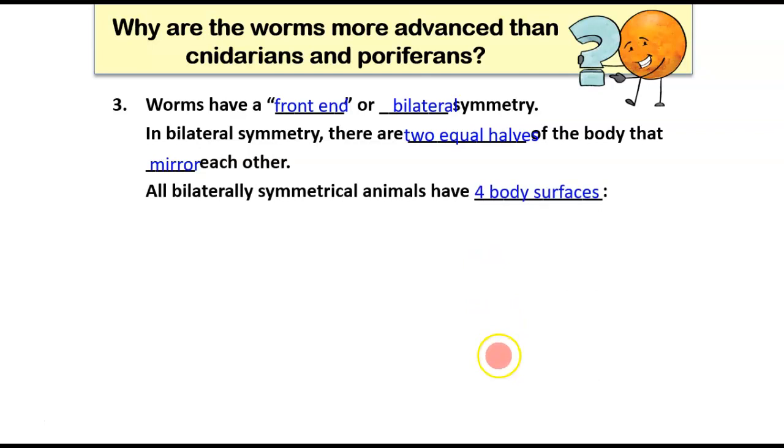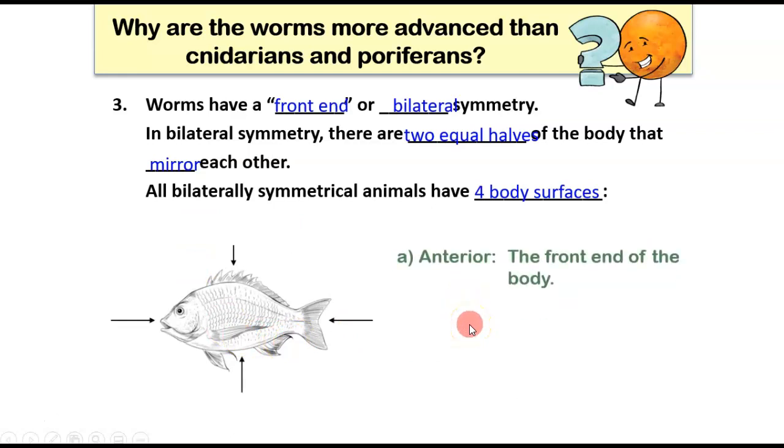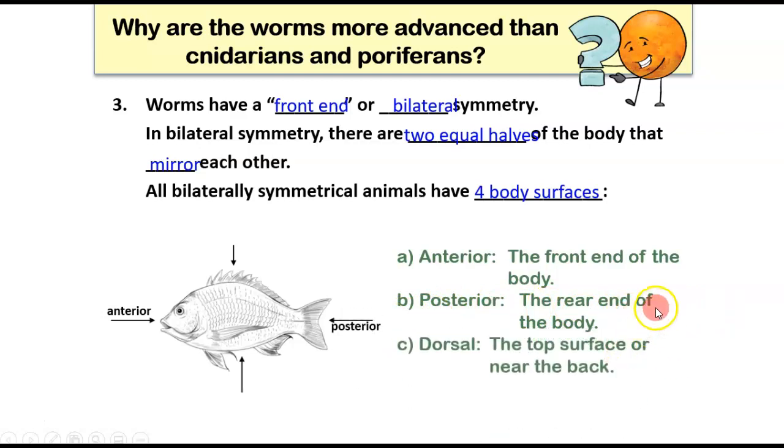Now all bilaterally symmetric animals have four body surfaces. And you learned this the first quarter, but I just want to review this with you really quickly. So here's a fish. A fish is bilaterally symmetric. And if we look at the front end of the body towards the head, we call that position or that body surface anterior. When we're talking about the back end of the animal, I think I told you first quarter, think butt is posterior. That's the rear end of the body. Dorsal is the top surface near the back. So for you and I, that's our back. For this fish, it's that top layer. And then finally, it's ventral. For you and I, that's our belly. For this fish, it's its belly as well. It's the lower surface or the underside. So those are the four body surfaces that all bilaterally symmetric animals have.